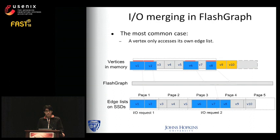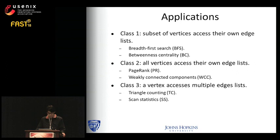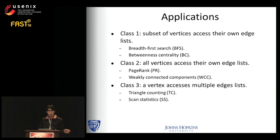The number of merges highly depends on how active vertices are executed. When a vertex only accesses its own edge list, executing active vertices in order of vertex ID guarantees the number of merges is maximized. Different graph applications have very different I/O access patterns, and FlashGraph tries to optimize various access patterns differently.